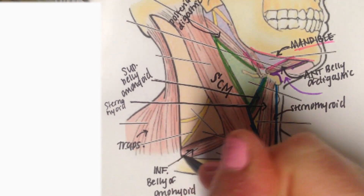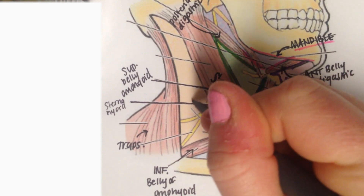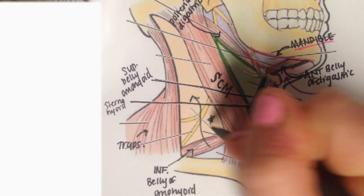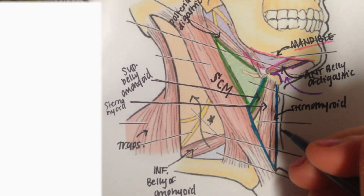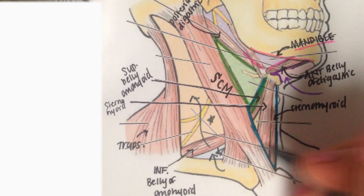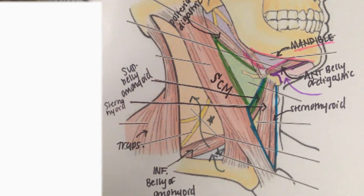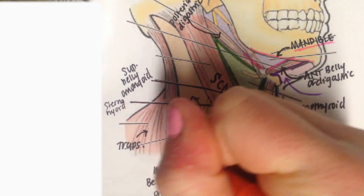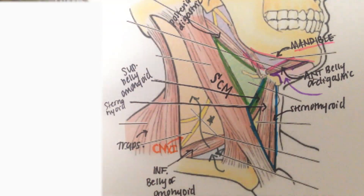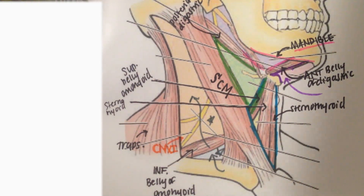We don't have to know the stats for this lab, but we also have two other triangles — the occipital triangle and the omoclavicular triangle. Here we can also see our cranial nerve 11, which is the spinal accessory nerve.